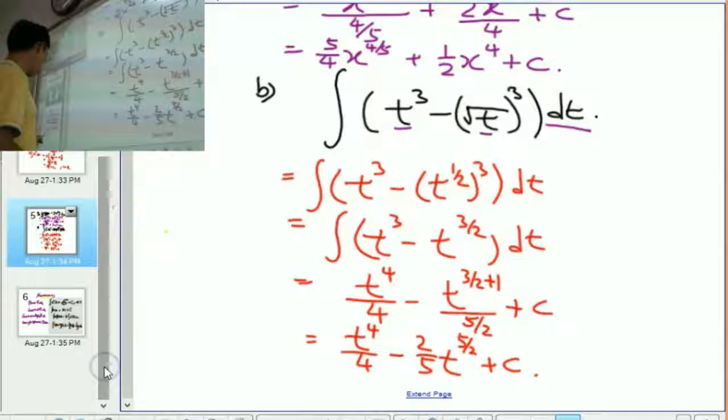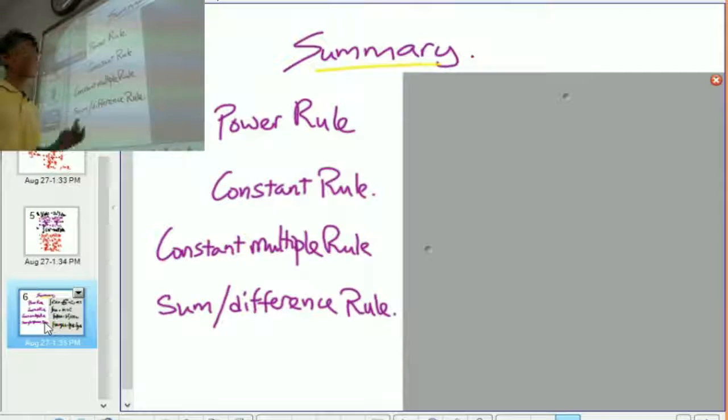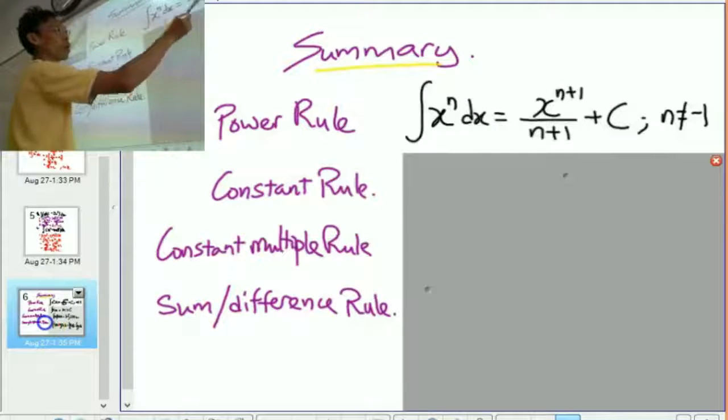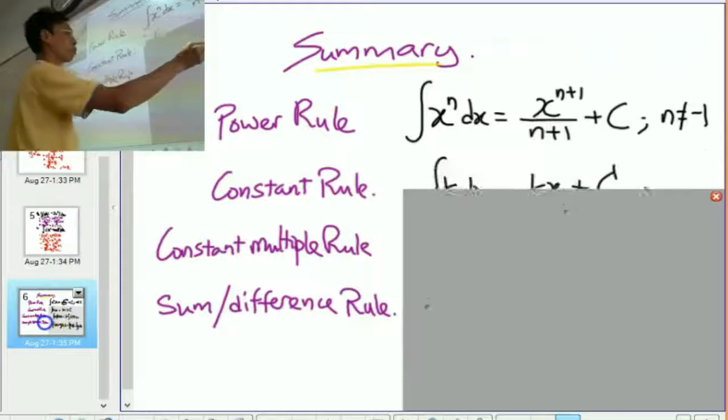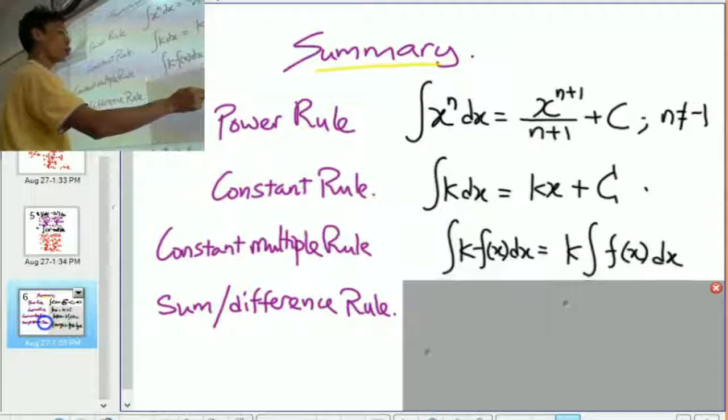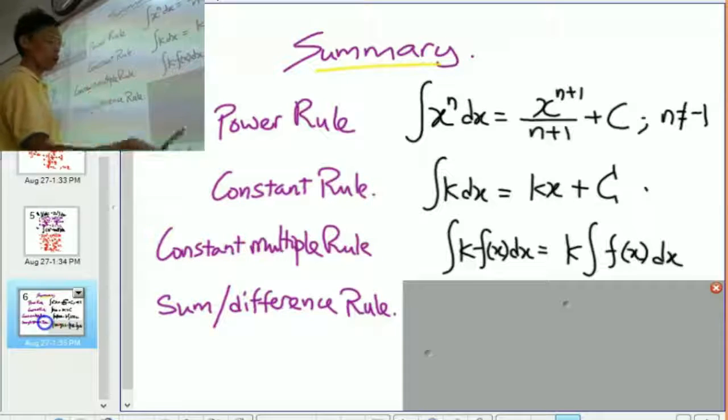So, now we look at the last slide. The last slide asks you to summarize all the things that we have done in this video. You may want to take a few minutes to do that. Once you're ready, you can check the answer. Alright. Welcome back. This is the power rule. n cannot be equal to negative 1. And here's the rule for the constant. And here's the rule for the constant of a multiple.